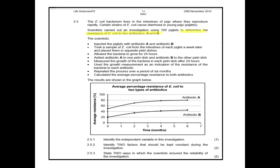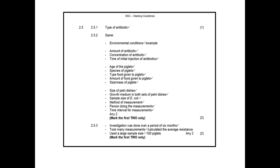Let's quickly go to the memo for 2.5. Here are the matric marking guidelines — there's only one answer on this memo. So if you said 'antibiotics A and B' you wouldn't have got the mark — it wasn't specific enough. Learn to say 'type of' or 'different types of.' The type of antibiotic was the independent variable.